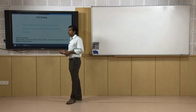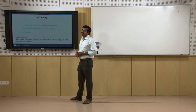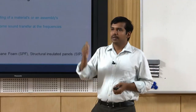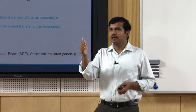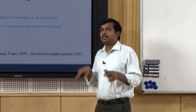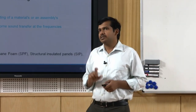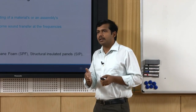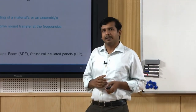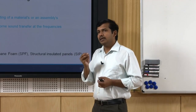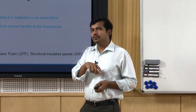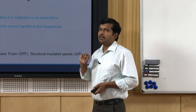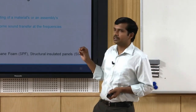Similar to noise reduction coefficient, transmission loss is determined at different frequencies and then represented as a single number called the Sound Transmission Class. One important thing: a particular partition might have a very good sound transmission class — say, two sets of gypsum board with glass wool insulation — but the moment you insert a door or window with lower STC ratings, those become the weaker elements.